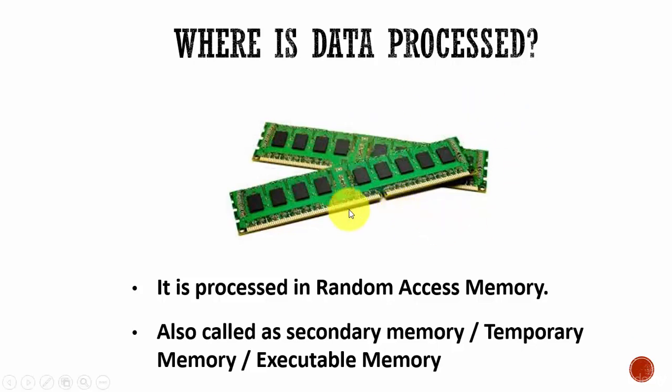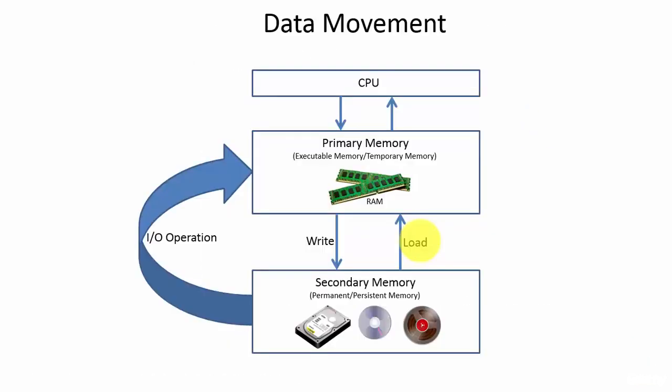Now, if you see the big picture on how the data is moving, you can see that as soon as the user requests for data, the data from the secondary memory which is stored in your storage devices is read into the primary memory, then all the necessary operations are performed, and then the data is returned to the user.